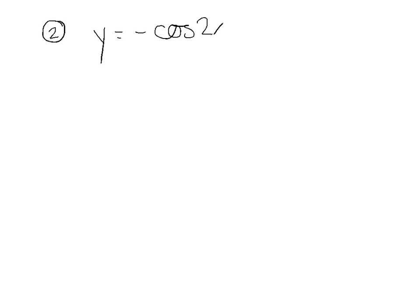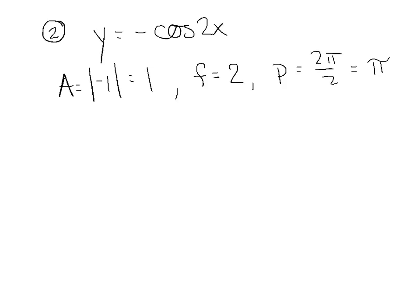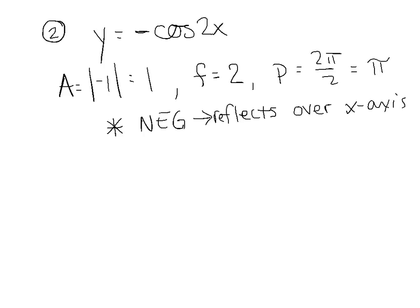For the second example, y equals negative cosine of 2x. The amplitude is the absolute value of the leading coefficient, which is 1. The frequency is 2, and the period is 2 pi divided by 2, which is pi. Now, what does that negative out front do? Put a little asterisk in your notes: that negative reflects the graph over the x-axis. What used to be a max is now a min, and vice versa. What used to be a min is now a max.